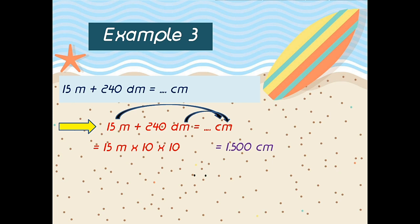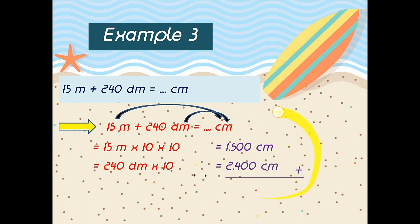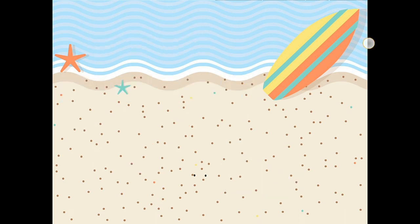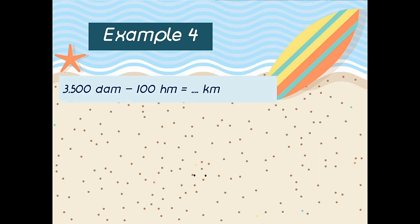Good, down. How many steps? Yeah, one. So the answer: 240 desimeter times 10 is 2400 centimeter. So 1500 centimeter plus 2400 centimeter is 3900 centimeter. Good. Next, the last example — example number four.